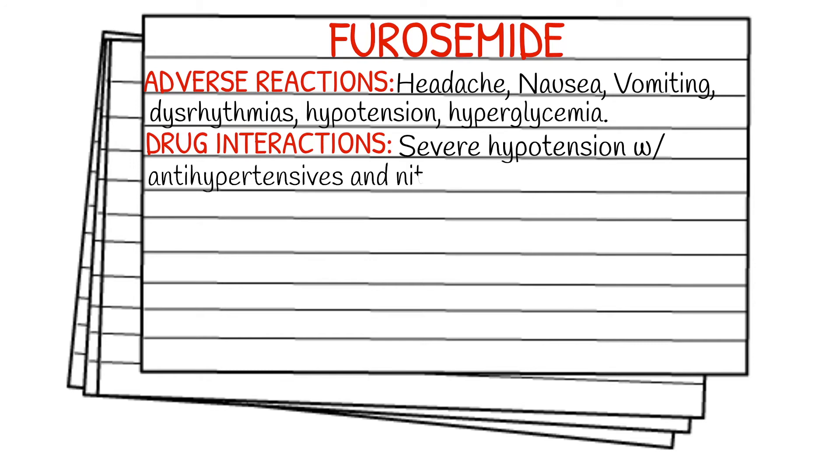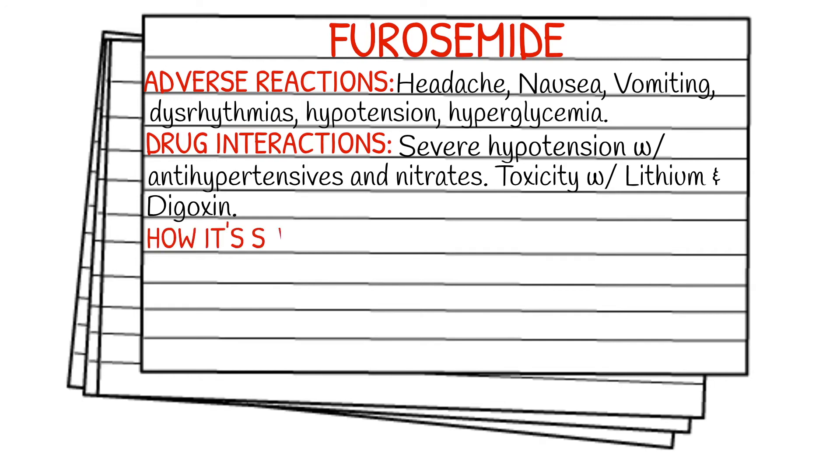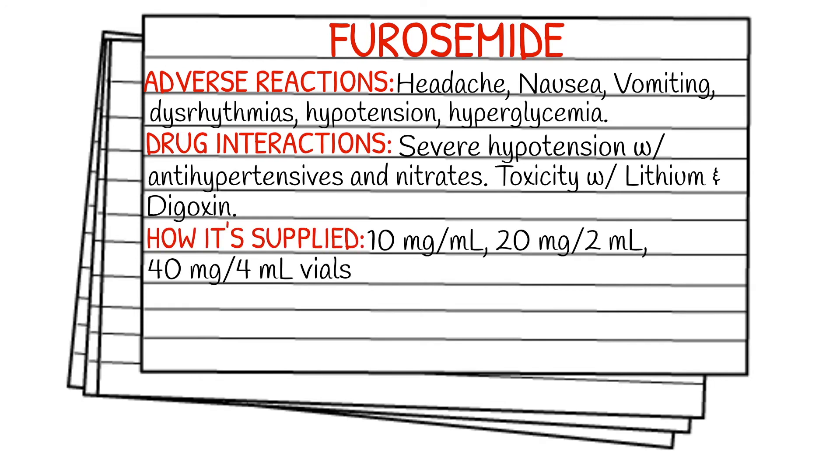How it's supplied: furosemide comes in 10 milligram per 1 ml, 20 milligram per 2 ml, or 40 milligram per 4 ml vials.